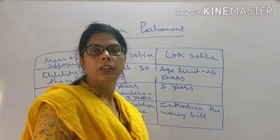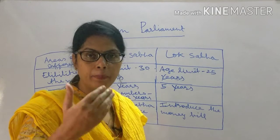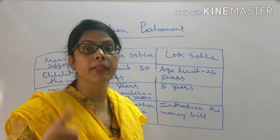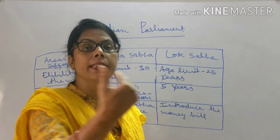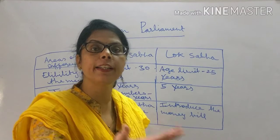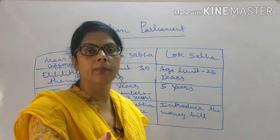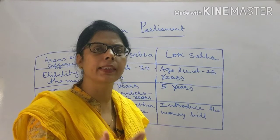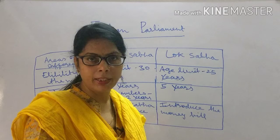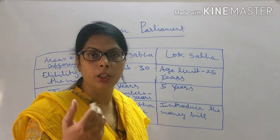In summary: Rajya Sabha and Lok Sabha are both houses of the Indian Parliament. Rajya Sabha is the upper house and represents the states; Lok Sabha is the lower house and represents the people of India. In Lok Sabha there is direct election; in Rajya Sabha there is indirect election. Rajya Sabha cannot introduce a money bill but has the same powers as Lok Sabha for other laws. Rajya Sabha is a permanent body, but Lok Sabha is a temporary body that can be dissolved.